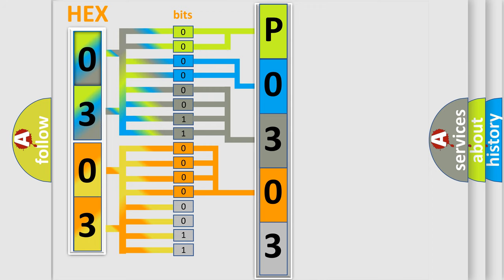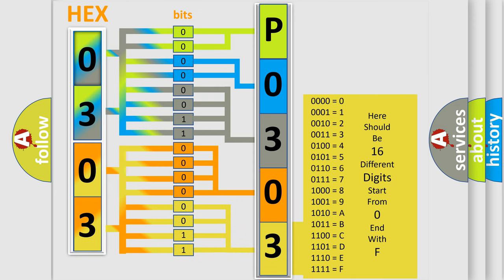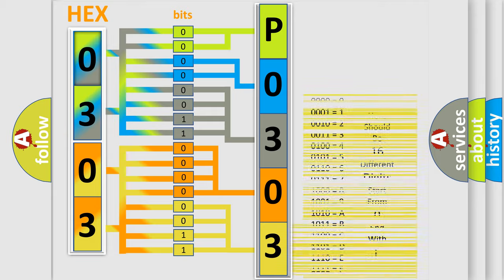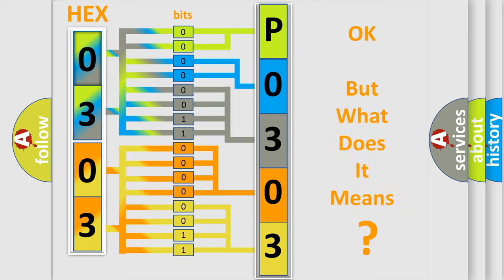A single byte conceals 256 possible combinations. We now know in what way the diagnostic tool translates the received information into a more comprehensible format. The number itself does not make sense to us if we cannot assign information about what it actually expresses.